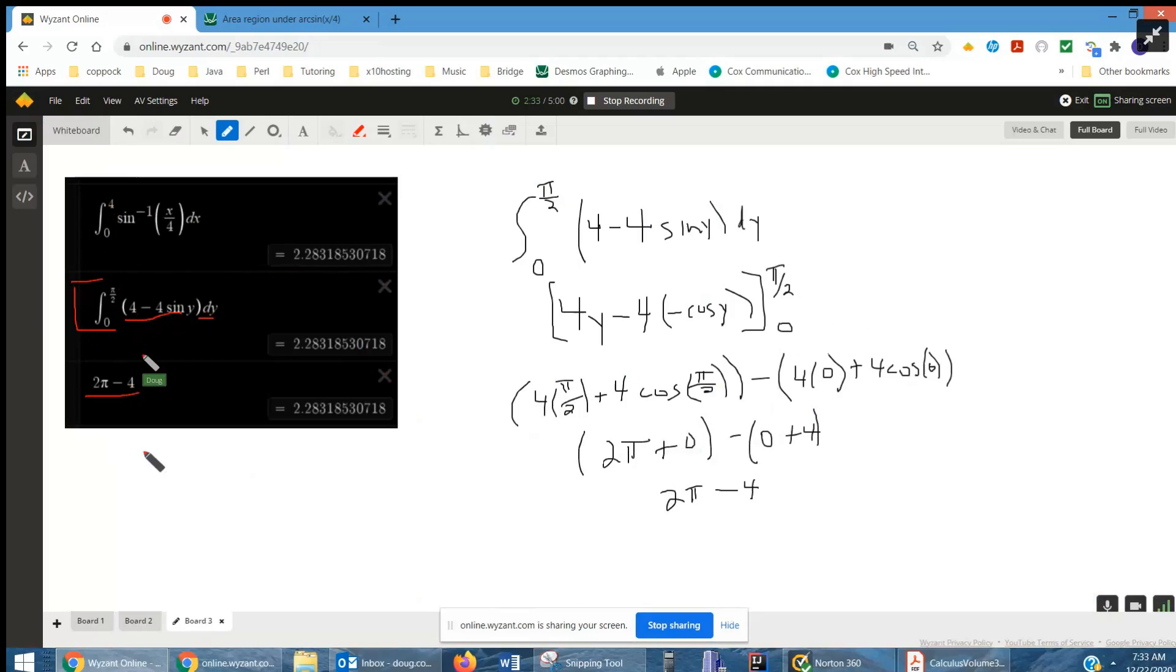Looks like that's the answer. Where'd that come from? I found the antiderivative of 4 minus 4 sine y. The antiderivative of sine is negative cosine from 0 to pi over 2.